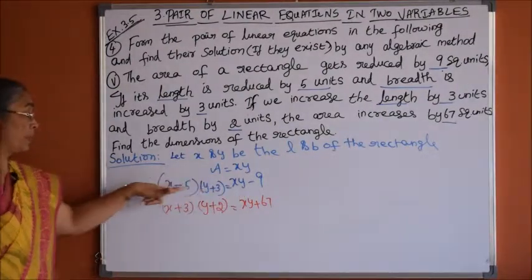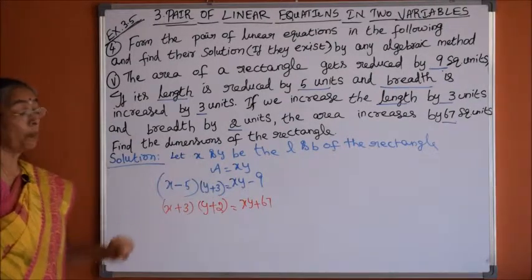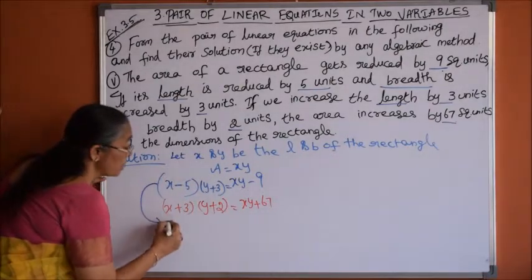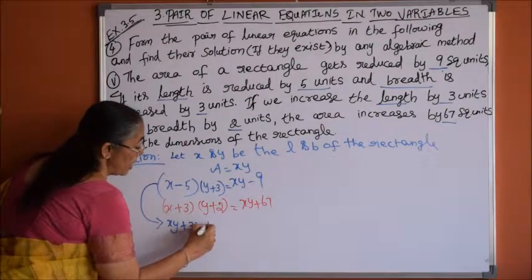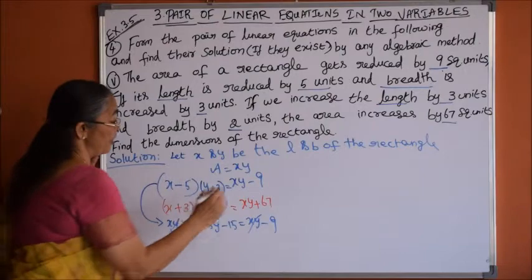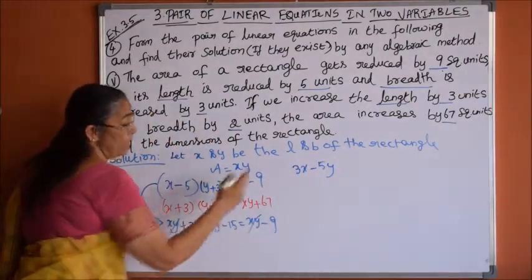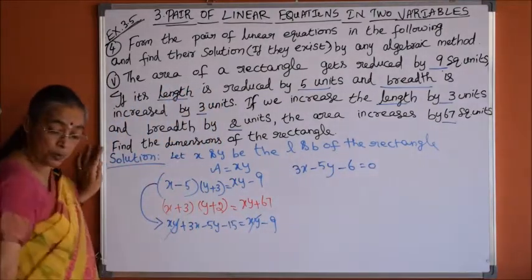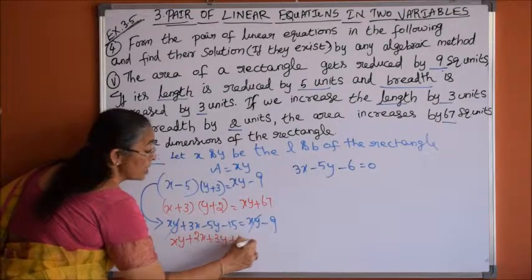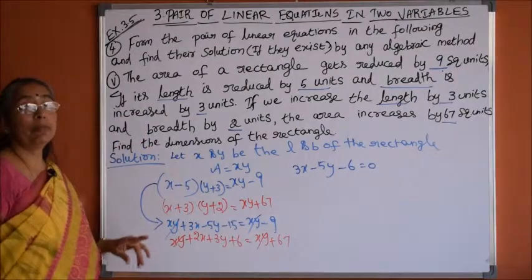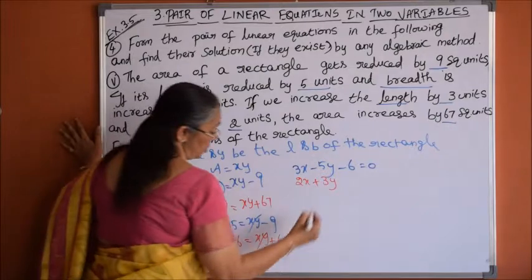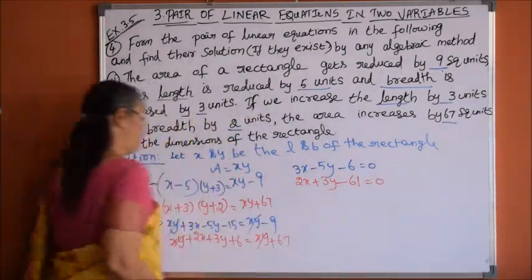These equations are not linear because the degree is 2, but we can reduce them into linear equations. Simplifying the first: xy plus 3x minus 5y minus 15 equals xy minus 9. The xy terms cancel, giving the linear equation 3x minus 5y minus 6 equals 0. For the second equation: xy plus 2x plus 3y plus 6 equals xy plus 67. The xy terms cancel, giving 2x plus 3y minus 61 equals 0.